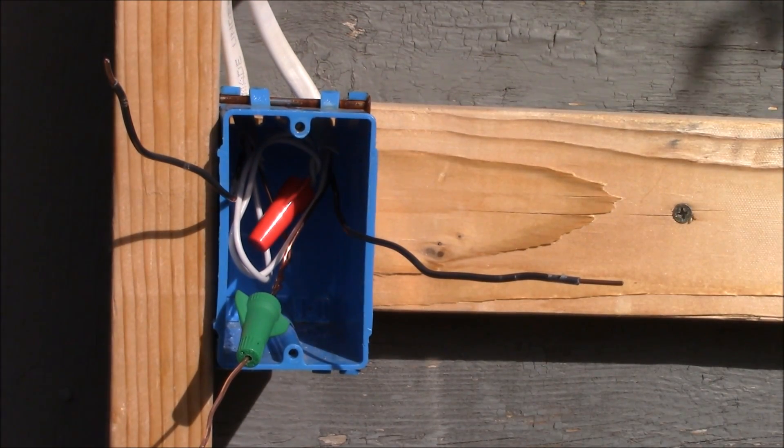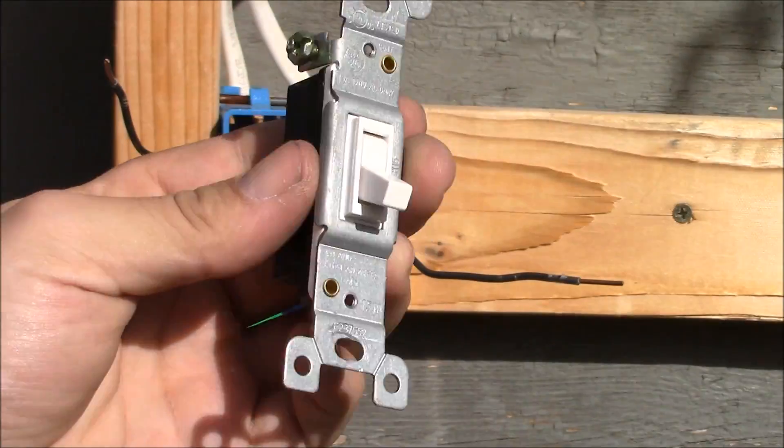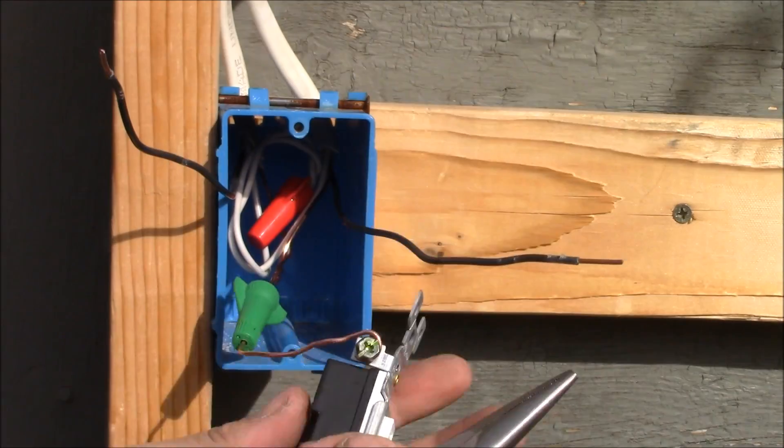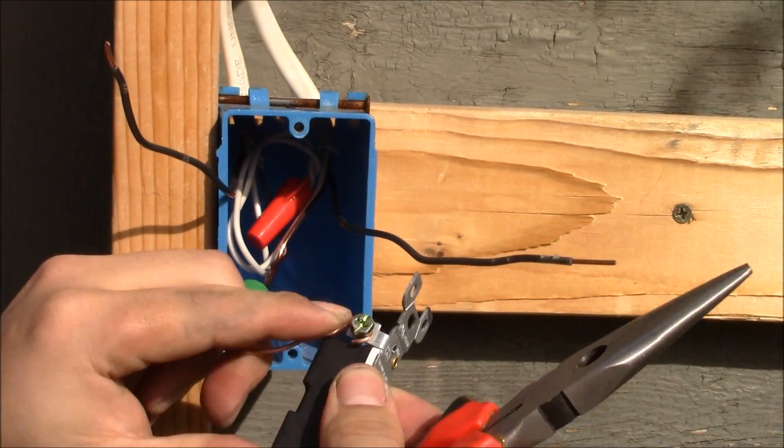So we have the ground ready to go, and here's a single pole switch. We're going to go around the green terminal in a clockwise manner, crimp it, and tighten it down securely.